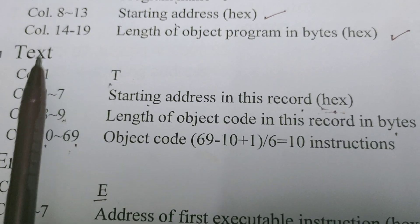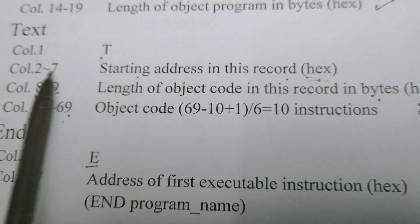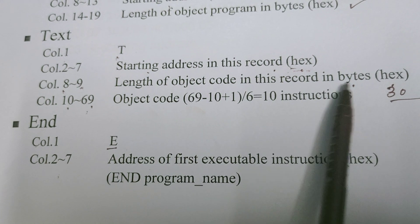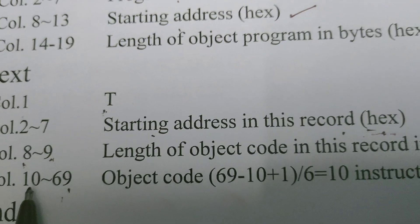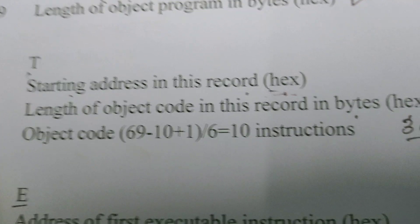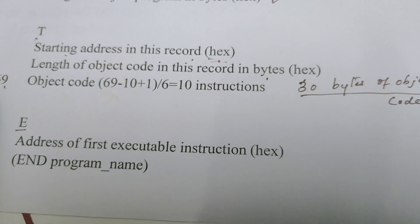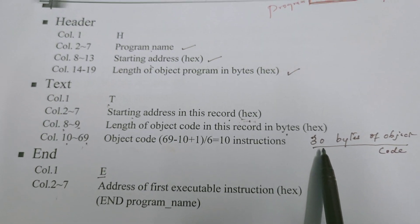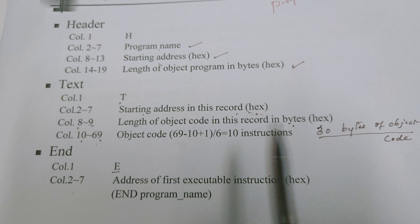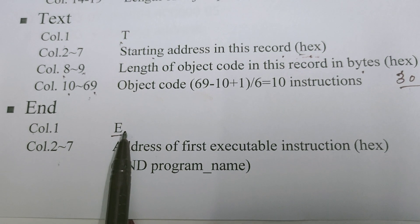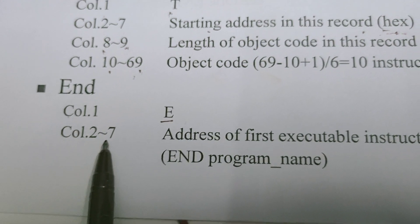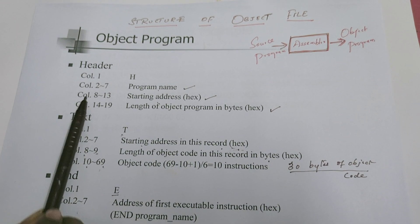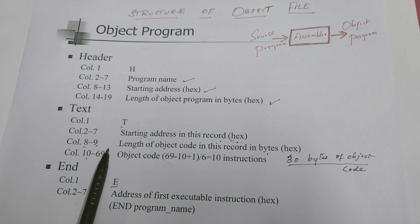Now let us move on to the text record. The first column contains the letter T. The next 6 columns contain the starting address of the particular text record. Then 2 columns — the 8th and 9th — contain the length of the entire text record, given in hexadecimal value. Further, 60 columns from the 10th to 69th column are available, where object codes are stored one by one. Please remember, every text record can store a maximum of 30 bytes of object code. Finally, the object file contains the end record, which begins with the letter E. Column 1 contains the letter E, and the next 6 columns contain the address of the first executable instruction. So in the entire object file, there is one header record, one end record, and the number of text records depends upon the length of the object file.